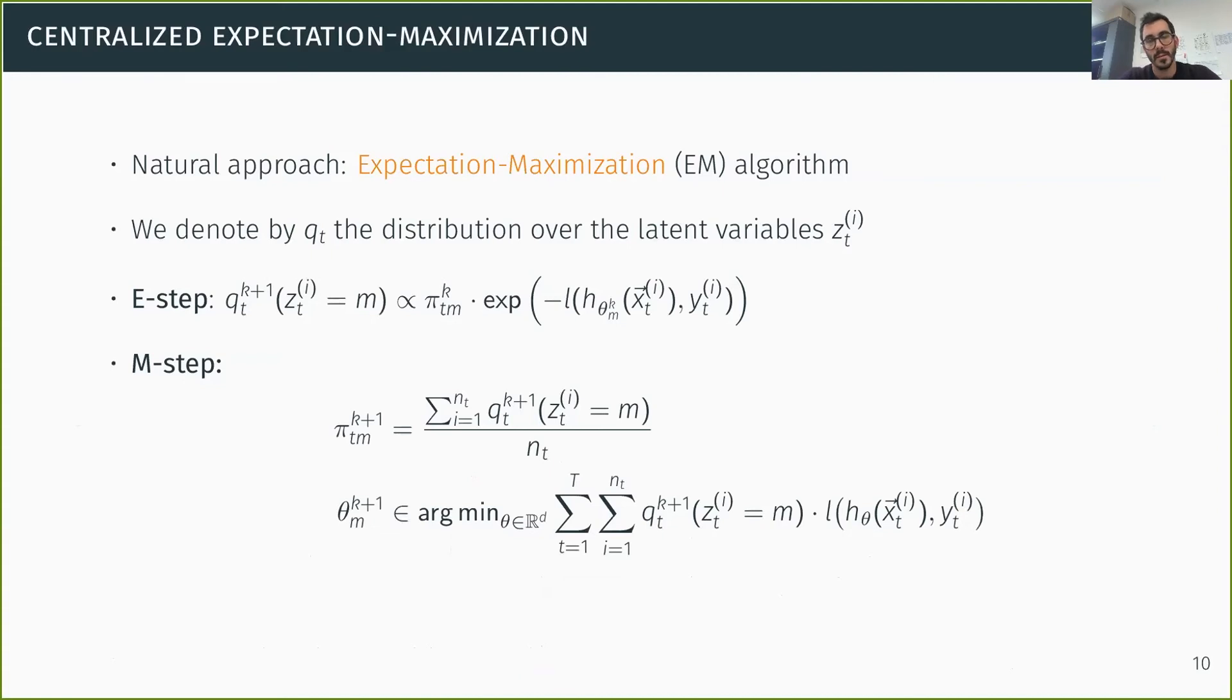Now, to minimize this empirical log likelihood, a natural approach is the expectation maximization algorithm because essentially we have this latent variable z that corresponds to which distribution each point was sampled from. And we denote by Qt the distribution over this latent variable. And we can work out the equations of EM and essentially we get the following updates. There is an E step where we update the distribution Q over the latent variables, essentially by something that is proportional to how well component M is doing on that particular point for all points of a given user T. And then there is the M step where we update first the weights that are assigned to each component based on Q. And then we update the component models by essentially solving a weighted empirical risk minimization problem where the weights are given by the distribution Q. So, of course, this is a centralized approach at this point. You can note, however, that the E step and the update for pi can be done locally by each user in the federated learning setting because it only relies on the knowledge of the local data set. But of course, updating the component models relies on the joint data and so it requires interaction across users.